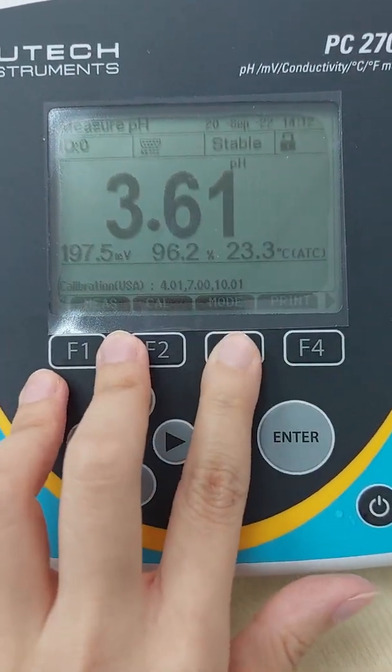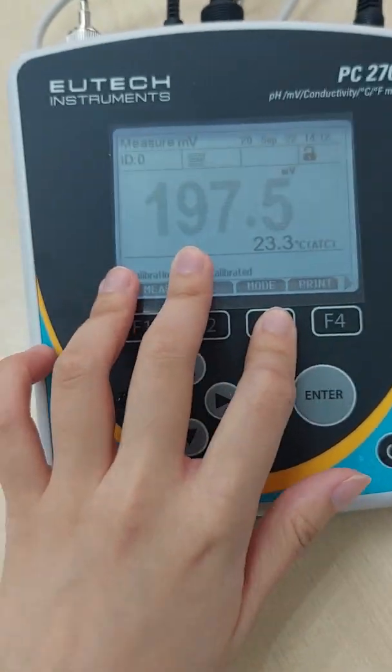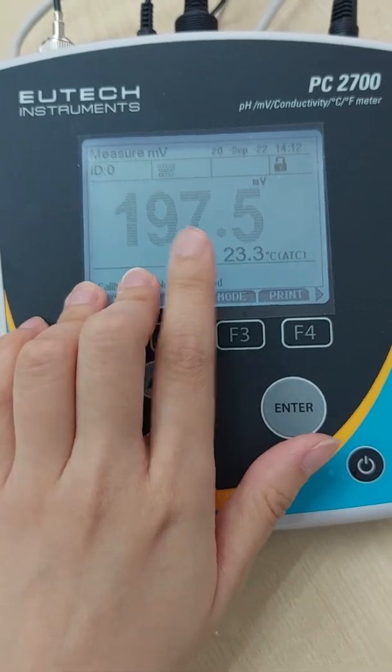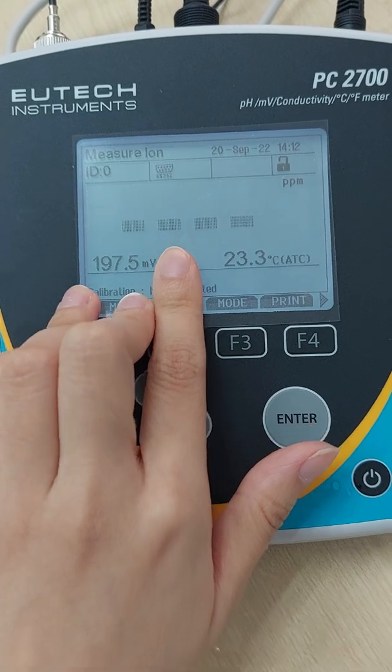And then we press mode. We're going to millivolt. So here, millivolt is using the same probe as the pH probe. Mode again, there will be ion.